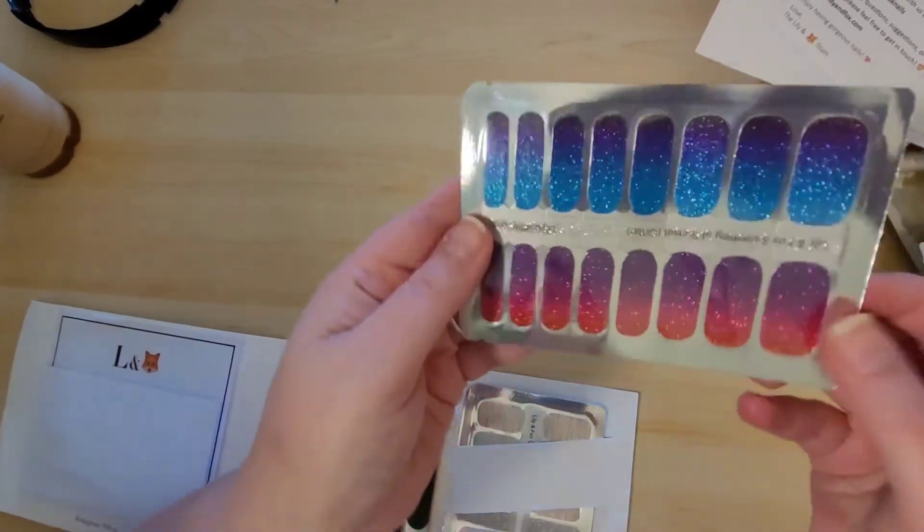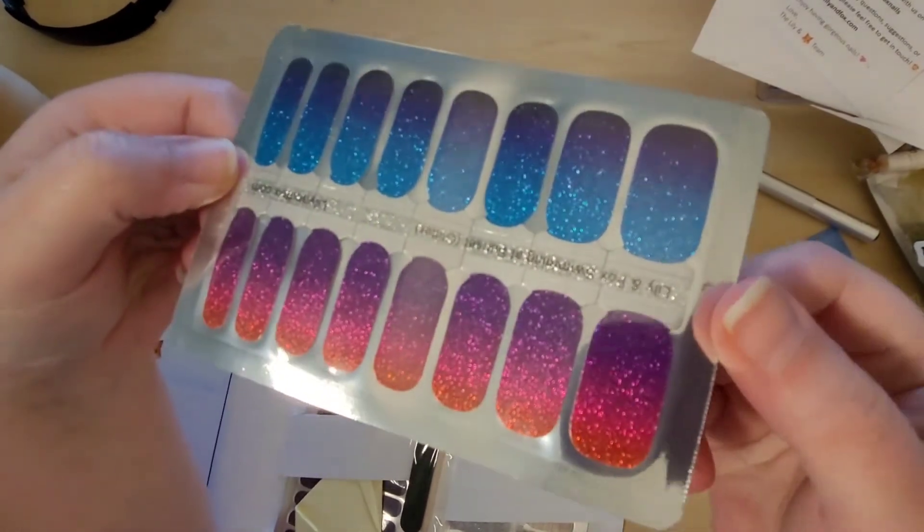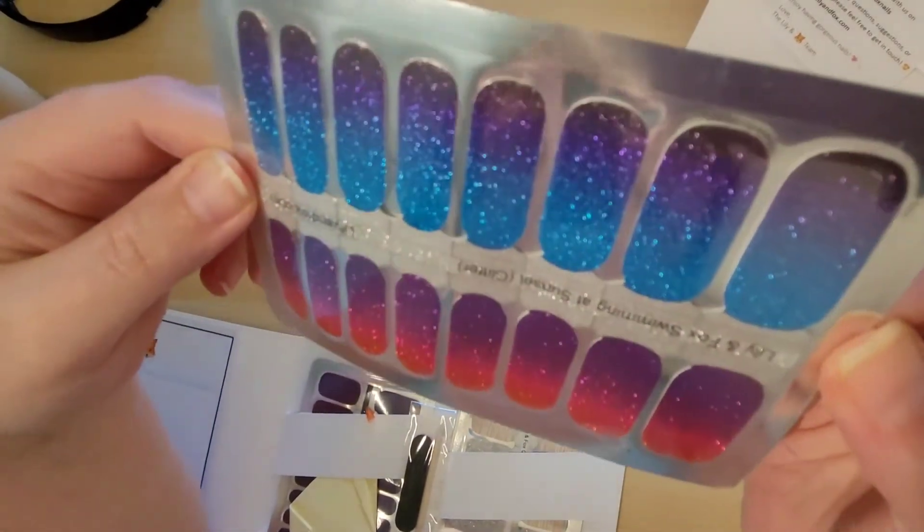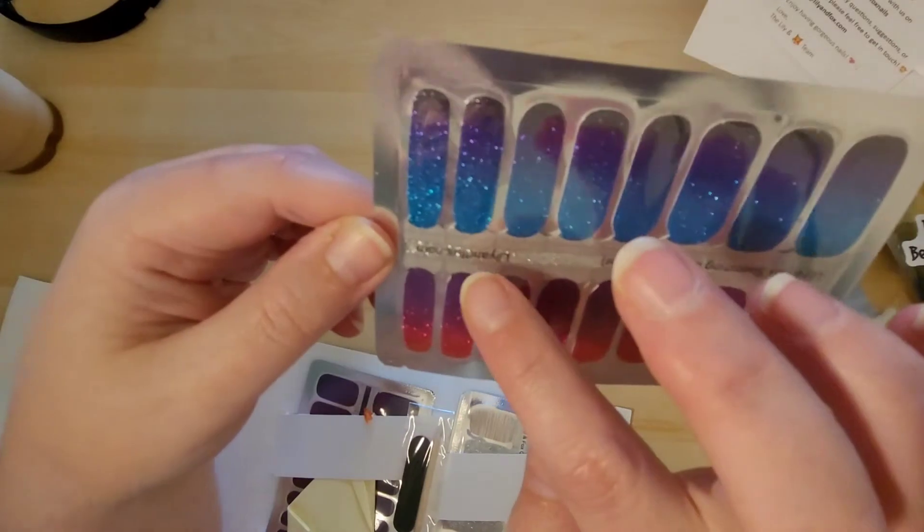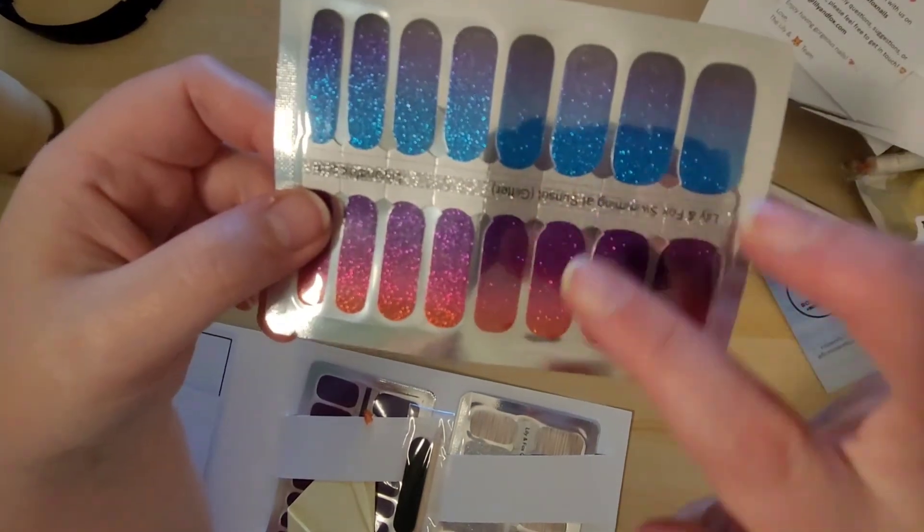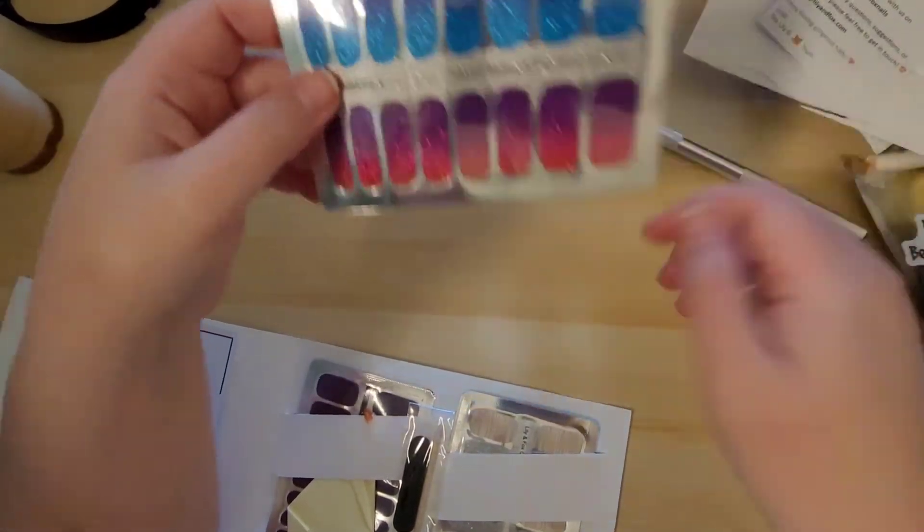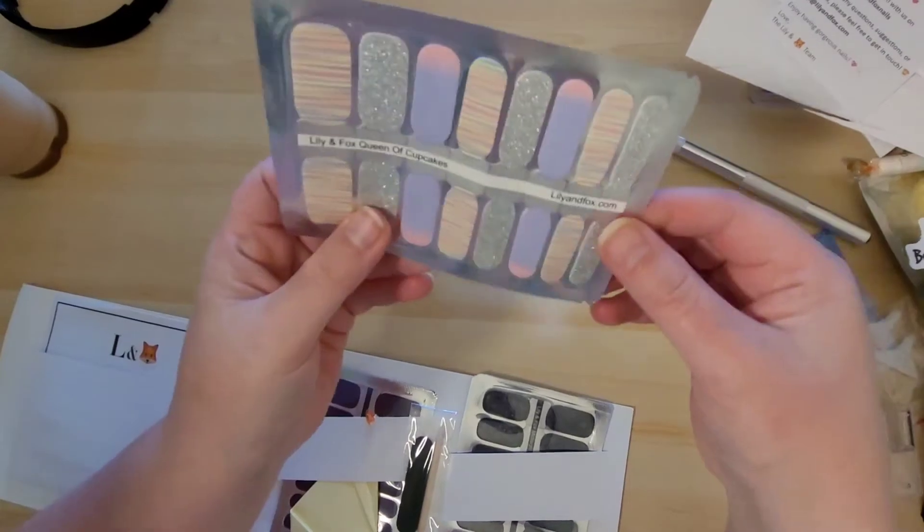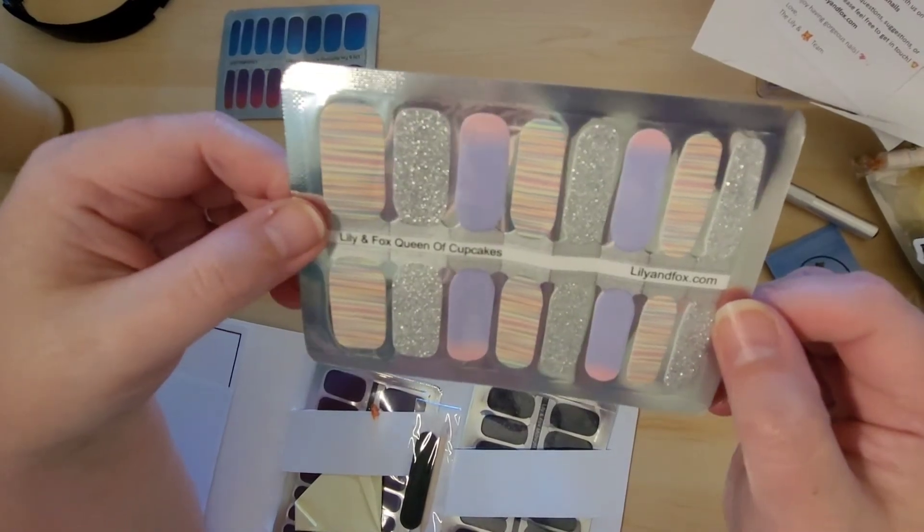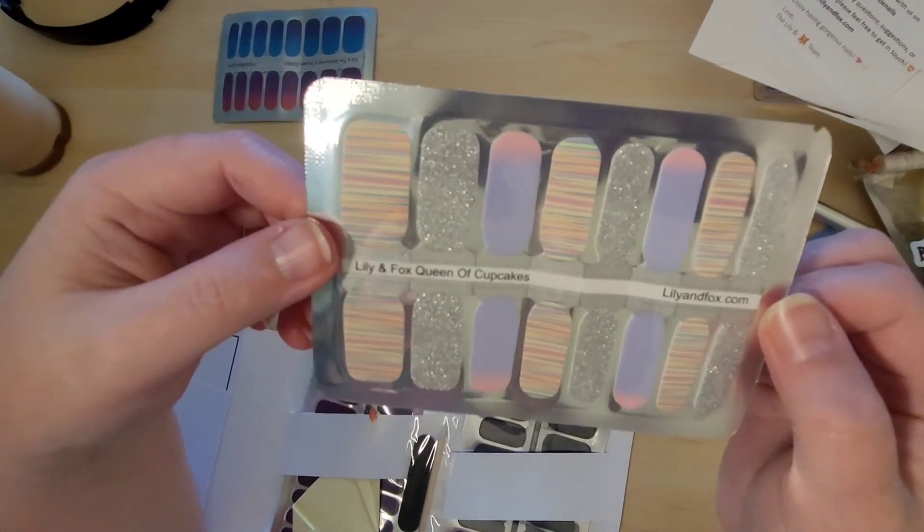It says 'Hi Melissa, thanks so much for placing your order. I hope you love our wraps as much as I do. I've included a free test set in case you want to practice. Enjoy having fabulous nails.' These are the ones that I ordered. I ordered these really pretty sparkly ombre. Look at how pretty they are. These ones look like sunset. These ones look like sunrise.